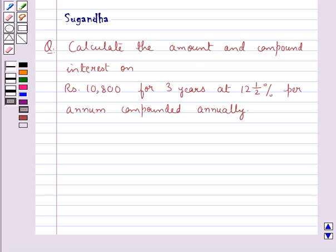The question says, calculate the amount and compound interest on Rs. 10,800 for 3 years at 12.5% per annum compounded annually.